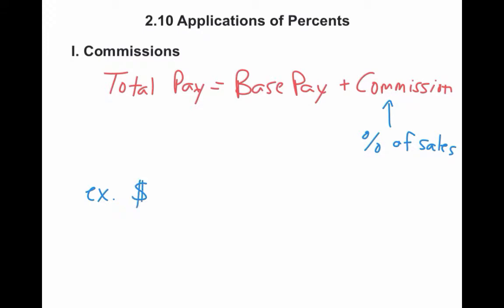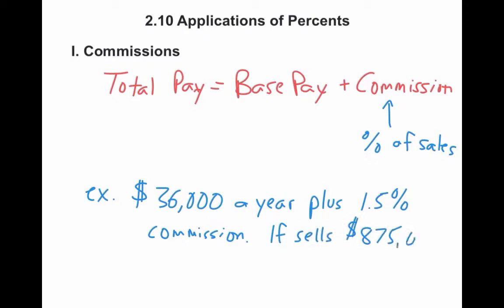You could write her name if you wanted to, or you could just say $36,000 a year. So Sheila makes $36,000 a year plus I'm going to do a 1.5% commission on her sales. If she sells $875,000 in a year, what does she make? If she sells $875,000, what's her total pay?